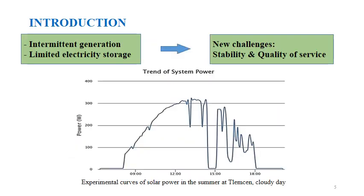Despite distributed renewable energy power plants providing clean energy and helping to reduce greenhouse emissions, as we cannot store as much electricity in batteries, the integration of distributed renewable energy micropower plants brings new challenges for the stability of the power grid and for the quality of service. Renewable energies have an intermittent generation that directly varies with weather — clouds, sun, wind, etc. The energy output can go from zero on a cloudy day to the maximum value spontaneously, and vice versa, as shown in the figure representing the power extracted from two photovoltaic panels on a cloudy day at Tlemcen, Algeria.